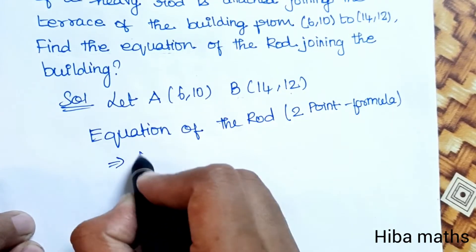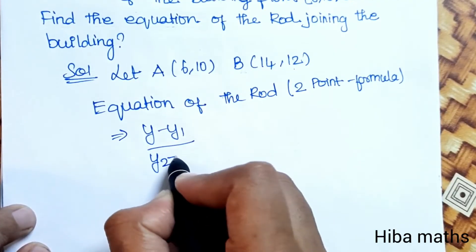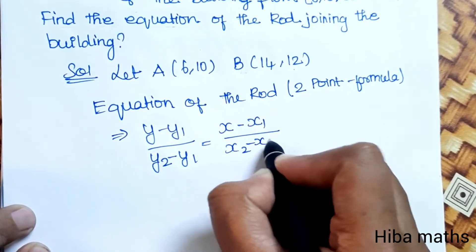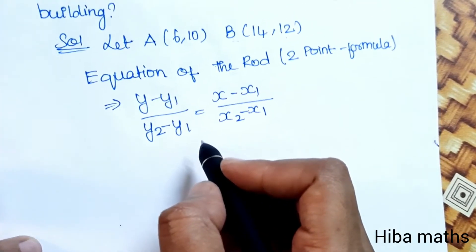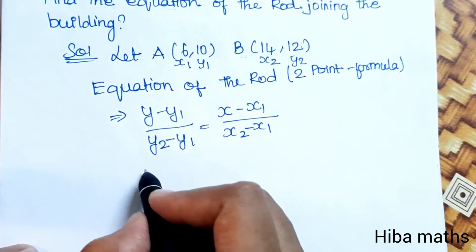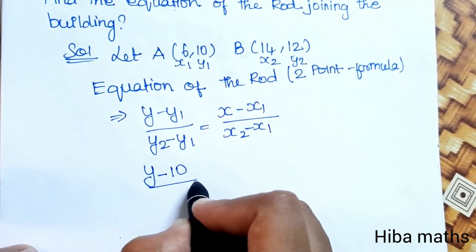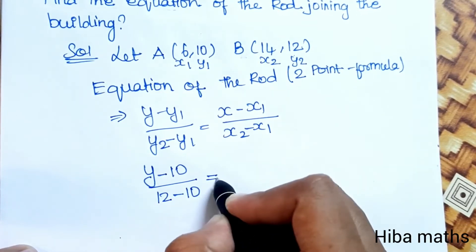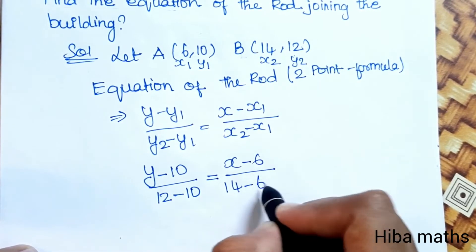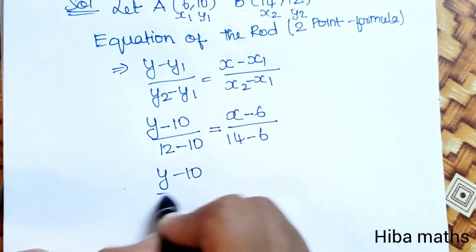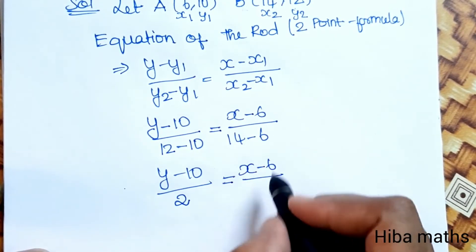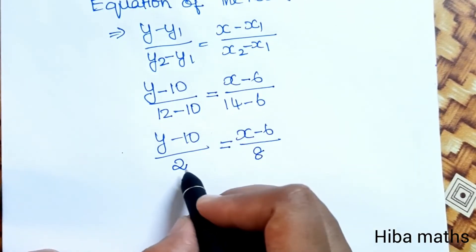Using the two-point formula: (y - y1)/(y2 - y1) = (x - x1)/(x2 - x1). Substituting values: (y - 10)/(12 - 10) = (x - 6)/(14 - 6). Y minus 10 over 2 equals x minus 6 over 8.